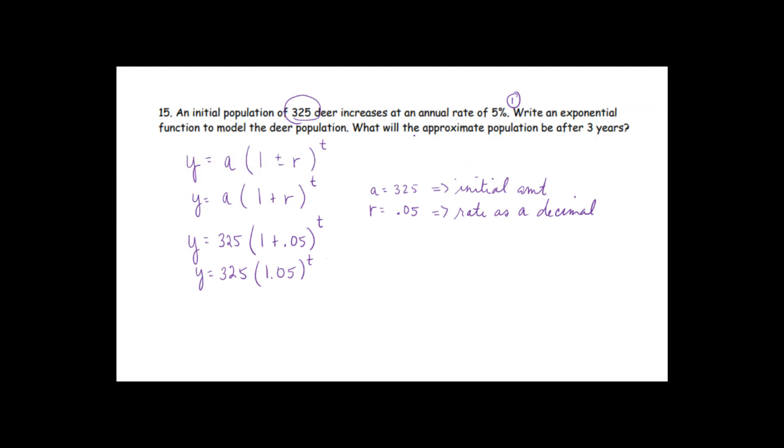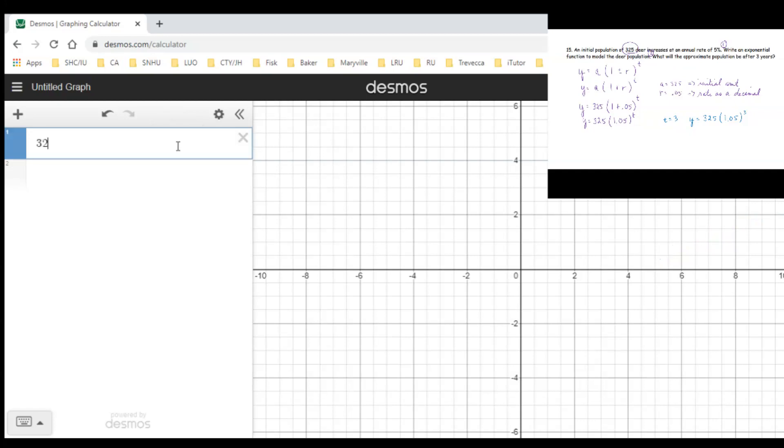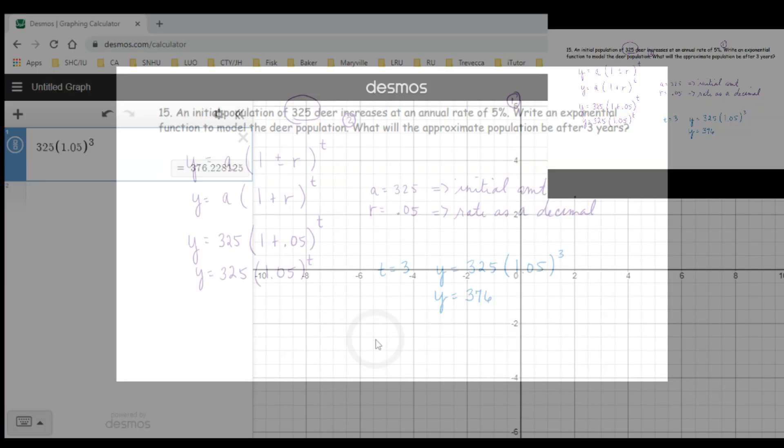And then number two says, what will the approximate population be after three years? So let's do that. We're going to say T is 3. So we're going to put 3 in for T in our formula. And you're going to go back to Desmos to type this value in to find the value. So I'm going to clear this here. You're going to type 325 parentheses 1.05 close parentheses, then do your caret and then type your three. You'll need to round according to whatever the instructions say to do. So if the instructions say round to the nearest whole animal, then of course you would do 376. If it asks for, which would be highly unusual to round to the nearest 10th, you could do that as well.